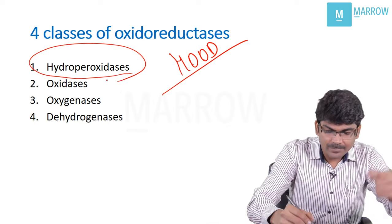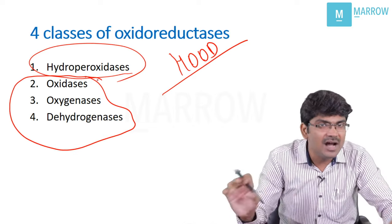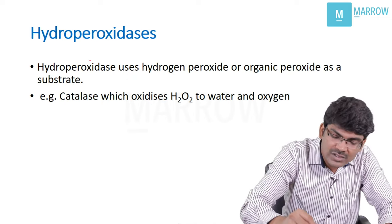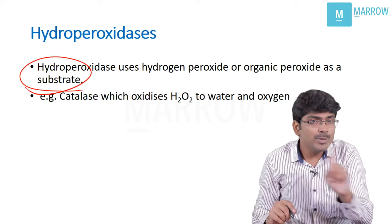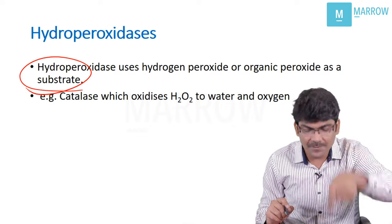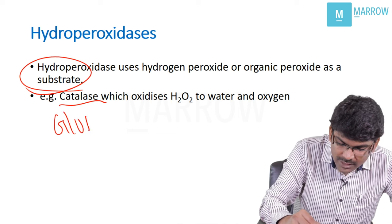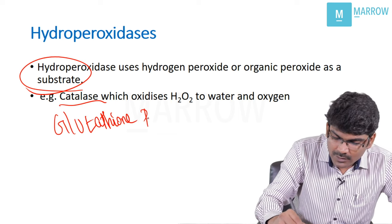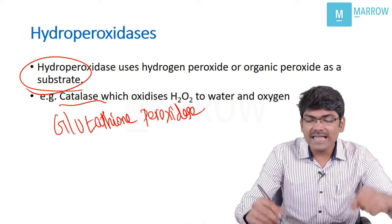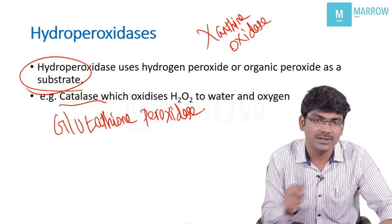First we will see what are hydroperoxidases. Hydroperoxidases use H₂O₂ as a substrate. They don't produce H₂O₂; they use H₂O₂ as a substrate and destroy it. For example, catalase and glutathione peroxidase are hydroperoxidases. But xanthine oxidase will produce H₂O₂, so it is not a hydroperoxidase.